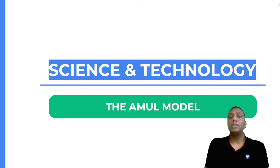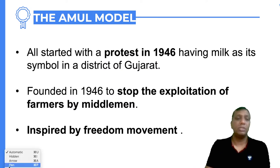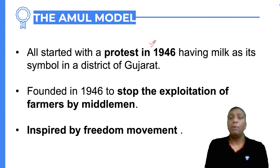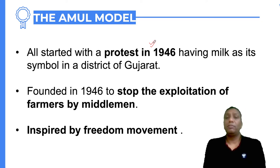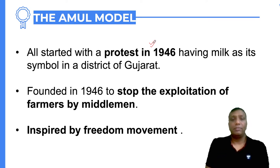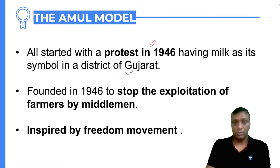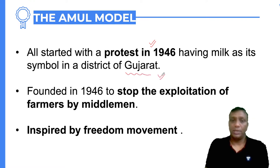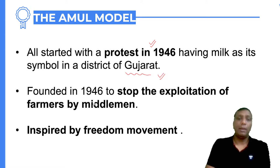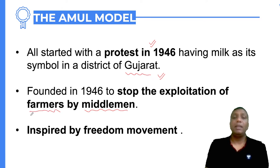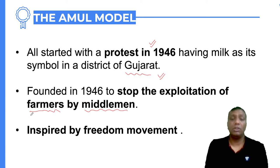Now the main topic: the Amul model. The whole story starts from 1946. I hope you know the name of the Father of the White Revolution, Varghese Kurian. The story begins in a district of Gujarat, where milk was the central issue. In 1946, some middlemen were doing exploitation of farmers involved in dairy production. Farmers were facing severe financial losses and mental disturbance, and a movement against the middlemen was started, totally inspired by the freedom movement.